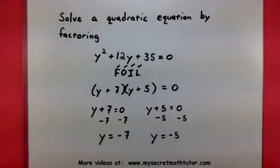So, sure enough, there we have it. We have two answers to this quadratic equation. We have negative 7 and negative 5. If you'd like to see some more videos, please visit mysecretmathtutor.com.